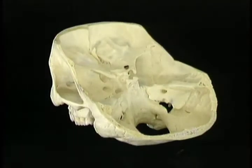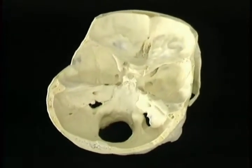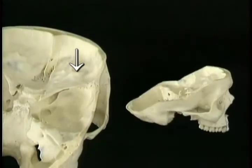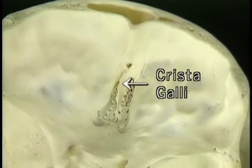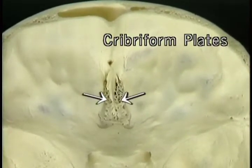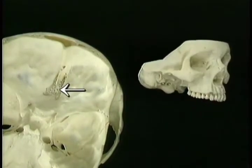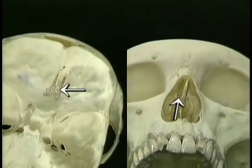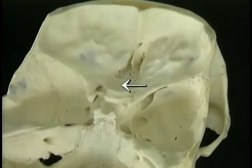We saw the posterior cranial fossa in the previous section. In this section we'll look at the main features of the anterior and middle cranial fossae. The bone that forms the upward bulge in the floor of the anterior fossa is the same bone that forms the roof of the orbit. This crest in the midline is called the crista galli. On either side of it is a depression, the base of which is formed by small areas of thin perforated bone — the cribriform plates. The cribriform plate forms the very narrow roof of the nasal cavity. The filaments of the olfactory nerve, which transmits the sense of smell, pass through the openings in the cribriform plate. The flat area behind the cribriform plates is the roof of the sphenoid sinus.